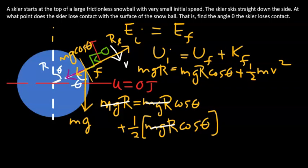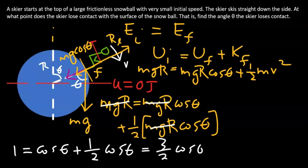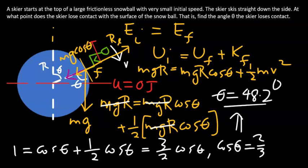Solving 1 equals cosine theta plus half cosine theta, meaning 3 over 2 cosine theta. What that means is cosine theta equals 2 over 3. Solving for theta, you get theta to be 48.2 degrees. So that is the point where the skier loses contact on the snowball. And that solves the problem.